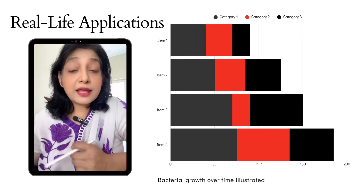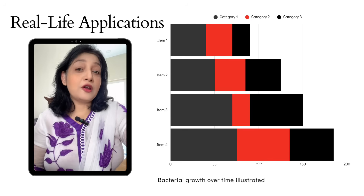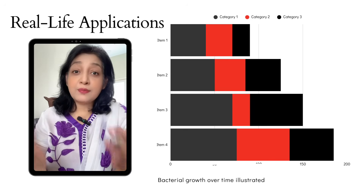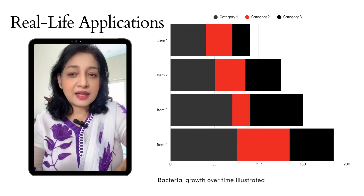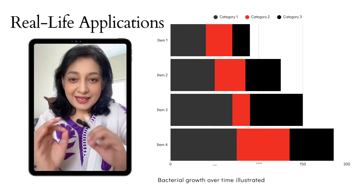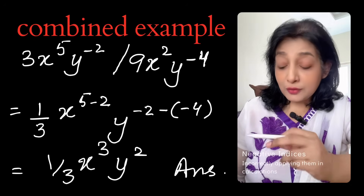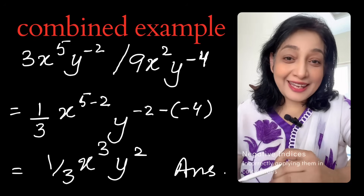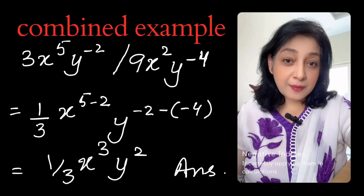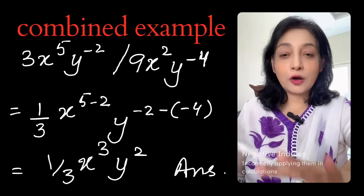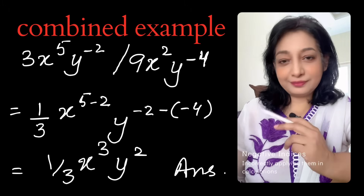What is the real-life link? Growth of bacteria, money, and population use exponential laws. In computer science, memory doubles when we want to double the memory. In physics, the inverse square law is applied. Now on screen I am solving a combined problem involving powers and square roots, step by step.